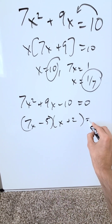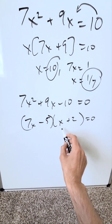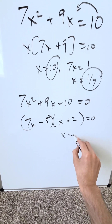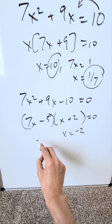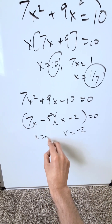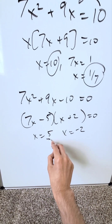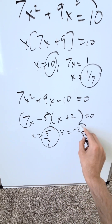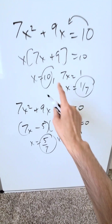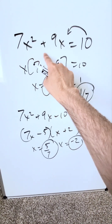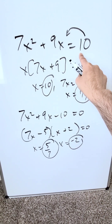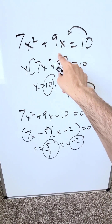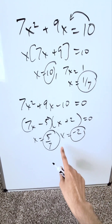Now individually solve for x from each factor. x equals minus 2 and x equals 5 over 7. Substituting both into the original quadratic equation, everything works out — these are your correct answers.